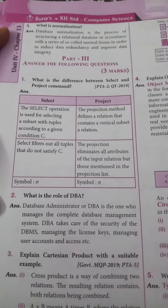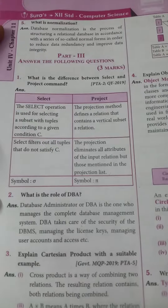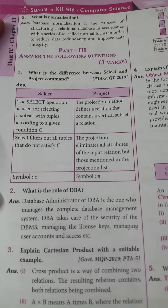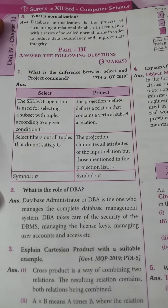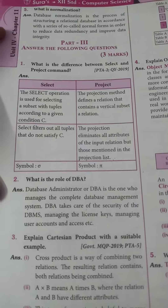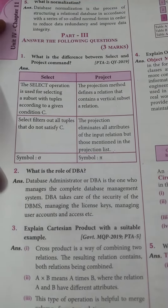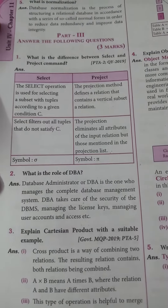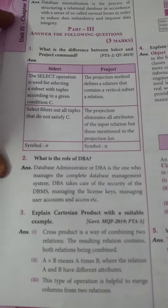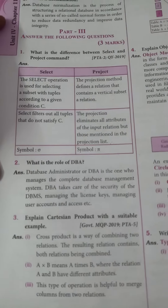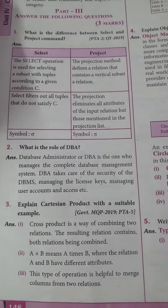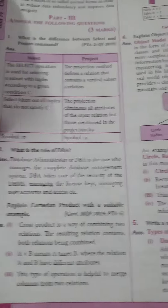First one: what is the difference between the select and project command? Second one: what is the role of the DBA? Third one: explain the Cartesian product with a suitable example.